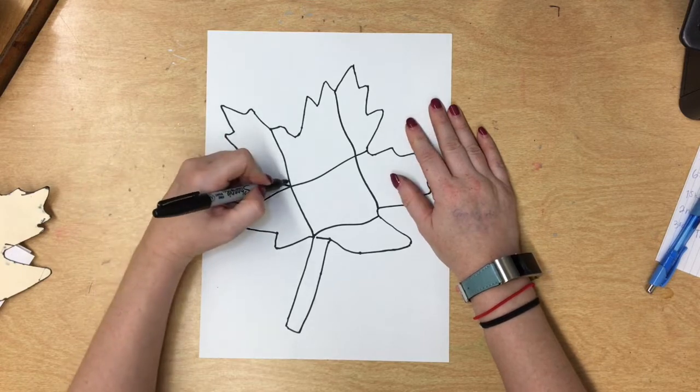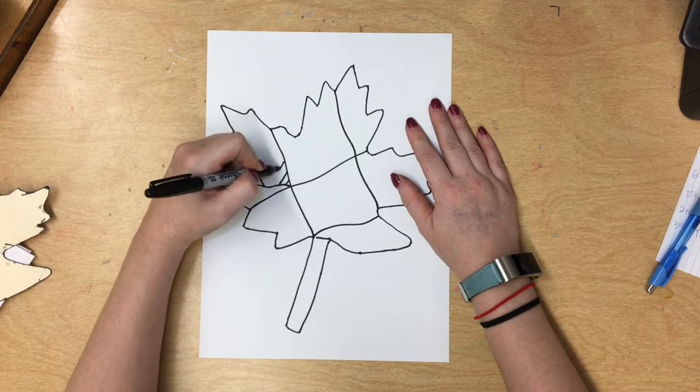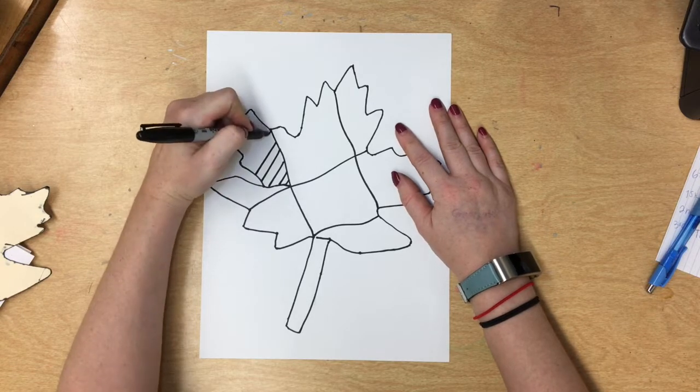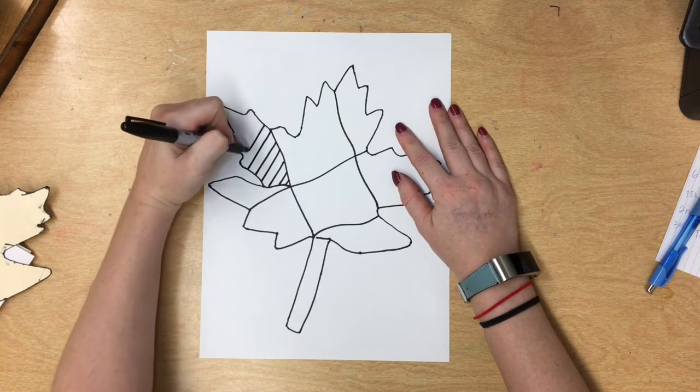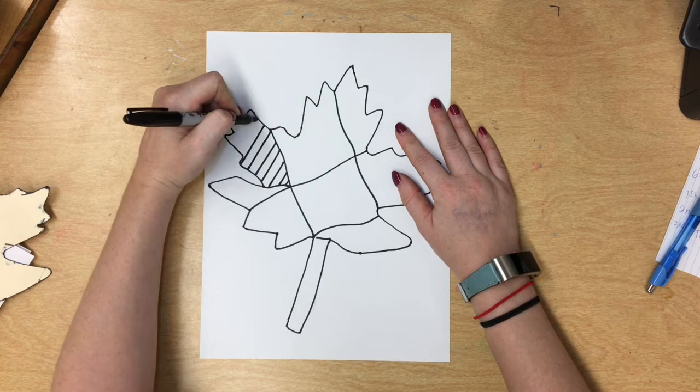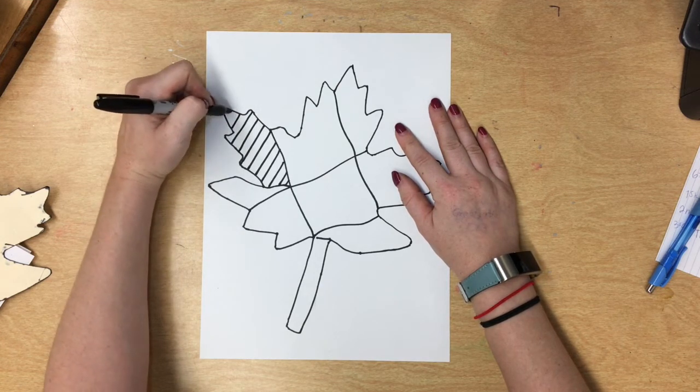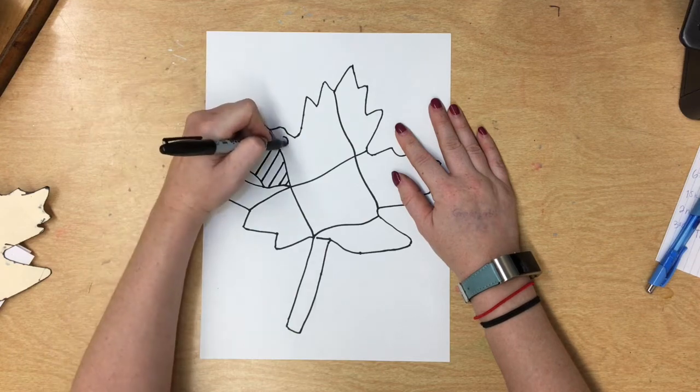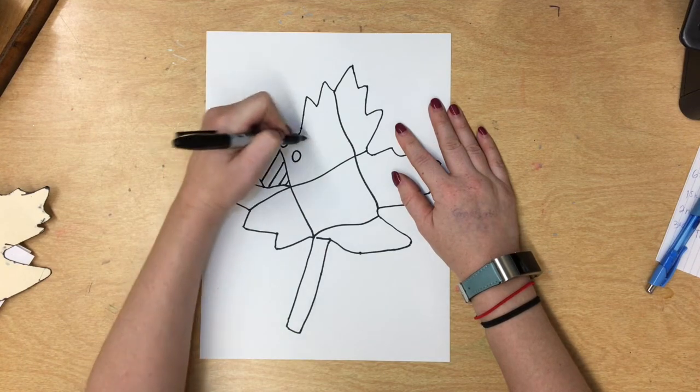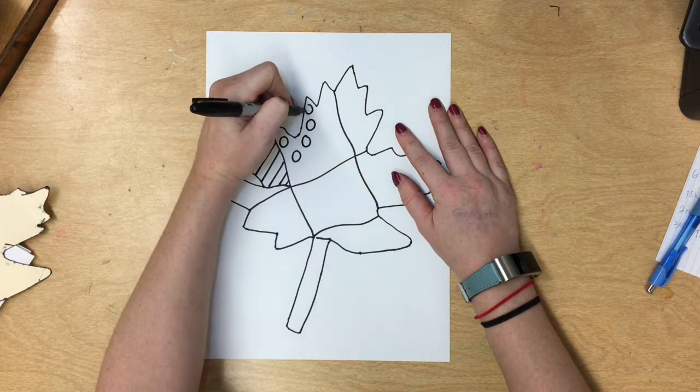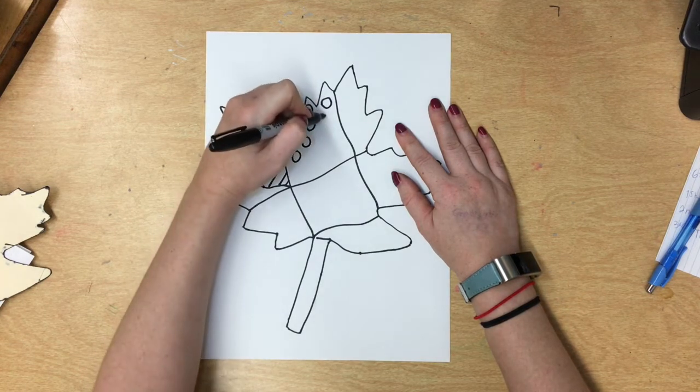And then inside each design I'm going to add some patterns. Whenever I start making patterns or Zentangles as they're called, it's tough for me to come up with ideas. So I usually start with straight lines in one section, and then after I'm done I'll add polka dots in the next.